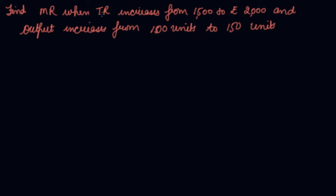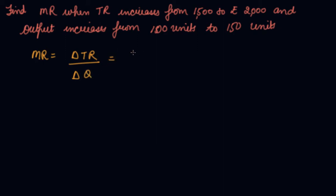This is the next question: find MR when TR increases from 1,500 to 2,000 and output increases from 100 units to 150 units. The formula here is MR = change in TR divided by change in output.